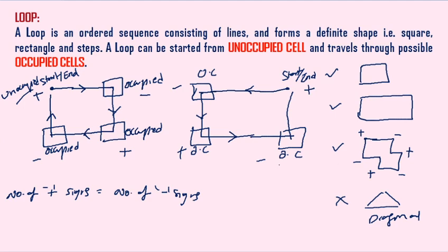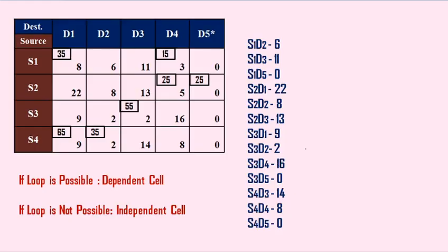The matrix we obtained using RAM is now analyzed. We study whether a loop is possible from each unoccupied cell. If a loop is possible, it is referred to as a dependent cell; if a loop is not possible, that cell is referred to as an independent cell. We must concentrate only on unoccupied cells. The unoccupied cells are: X1D2, X1D3, X1D5, X2D1, X2D2, X2D3, X3D1, X3D2, X3D4, X3D5, X4D3, X4D4, X4D5.